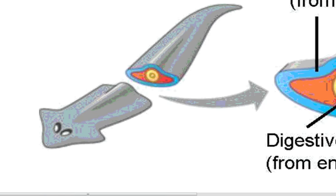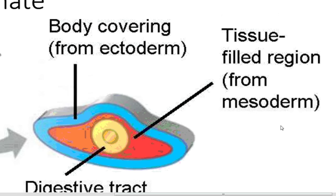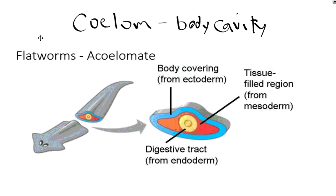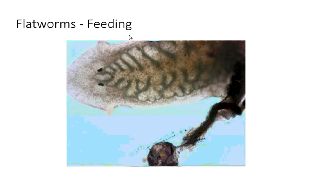The three tissue layers are the endoderm, mesoderm, and ectoderm. The endoderm — 'endo' meaning inside — is the innermost layer and forms the digestive tract in any animal, from flatworm to elephant. The mesoderm — 'meso' meaning middle — is where muscle tissue and bone tissue are found; flatworms have rudimentary muscle cells here. The ectoderm is the outer covering, like the skin. These three tissue layers will continue throughout the rest of the animals we study.